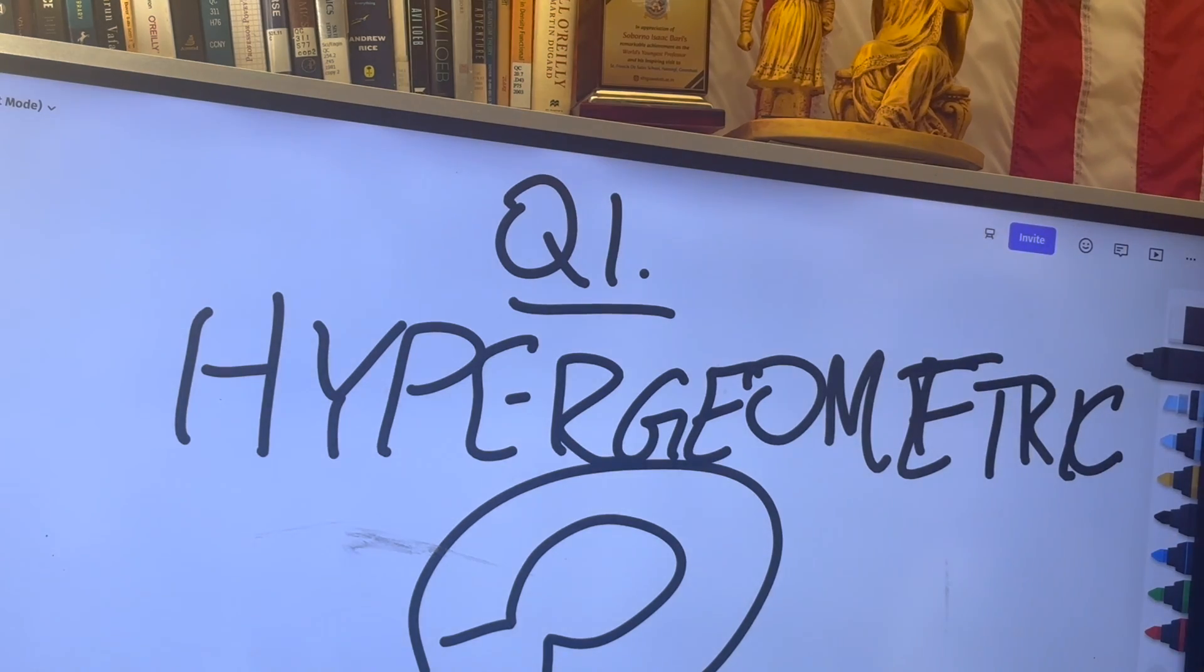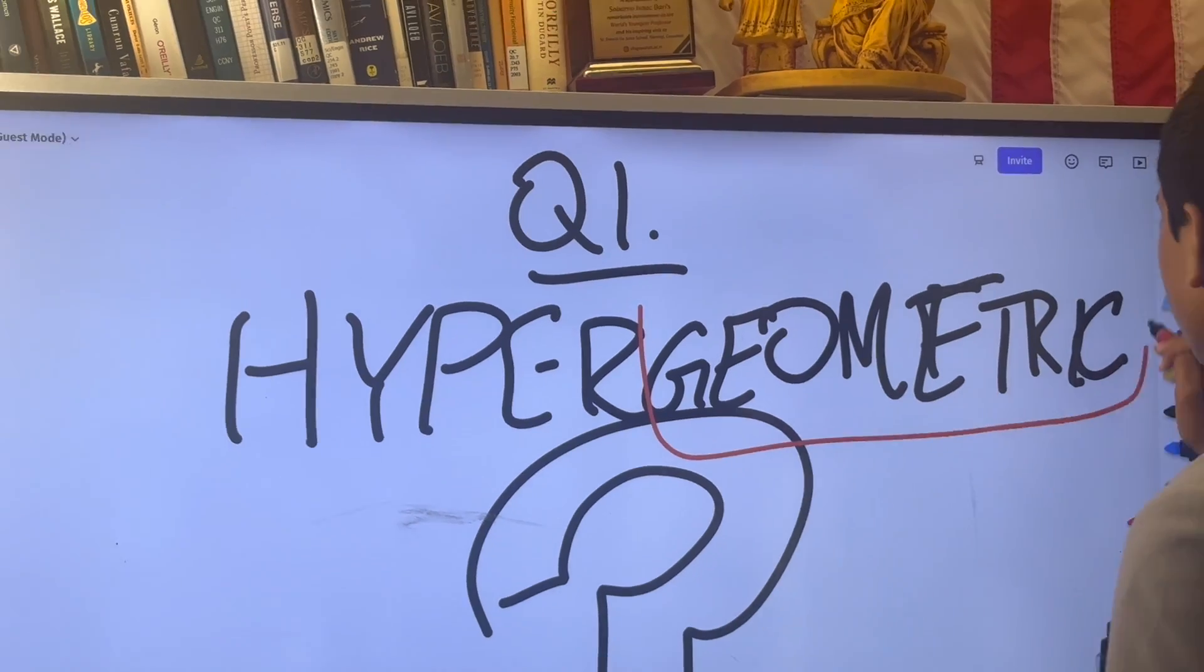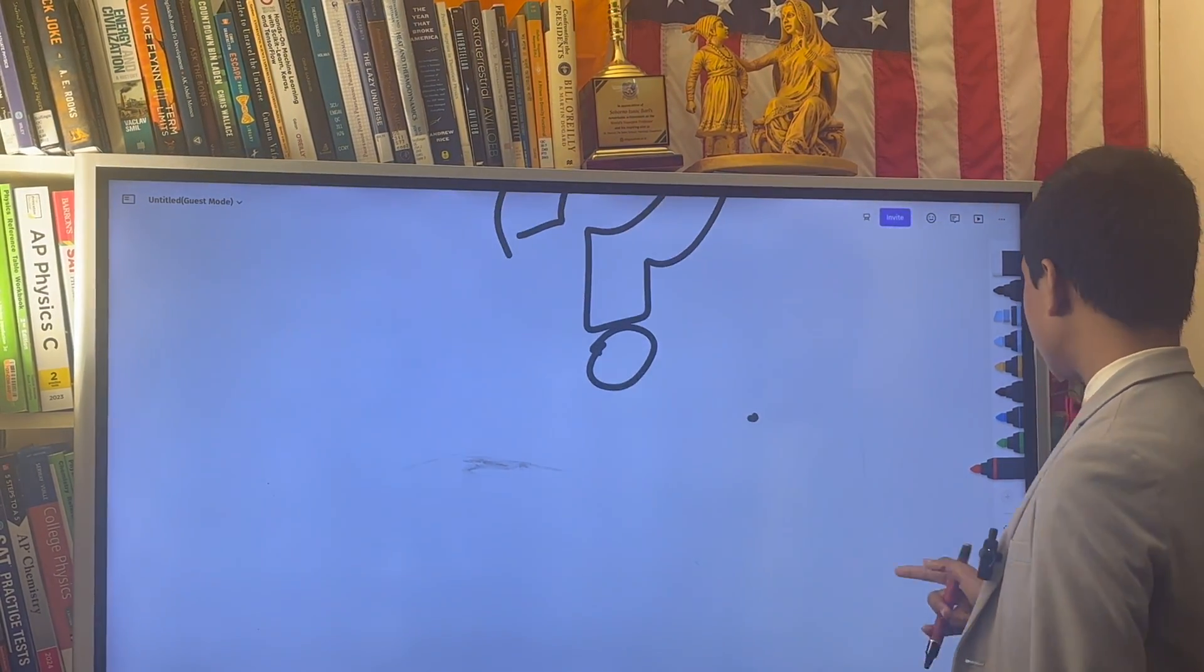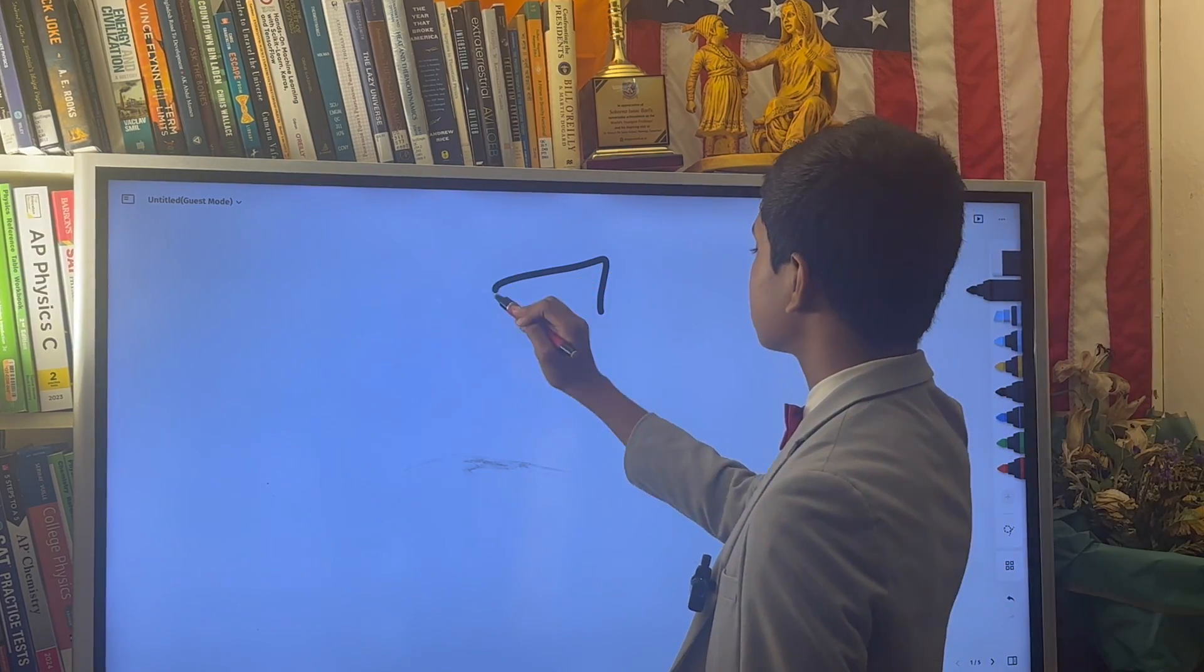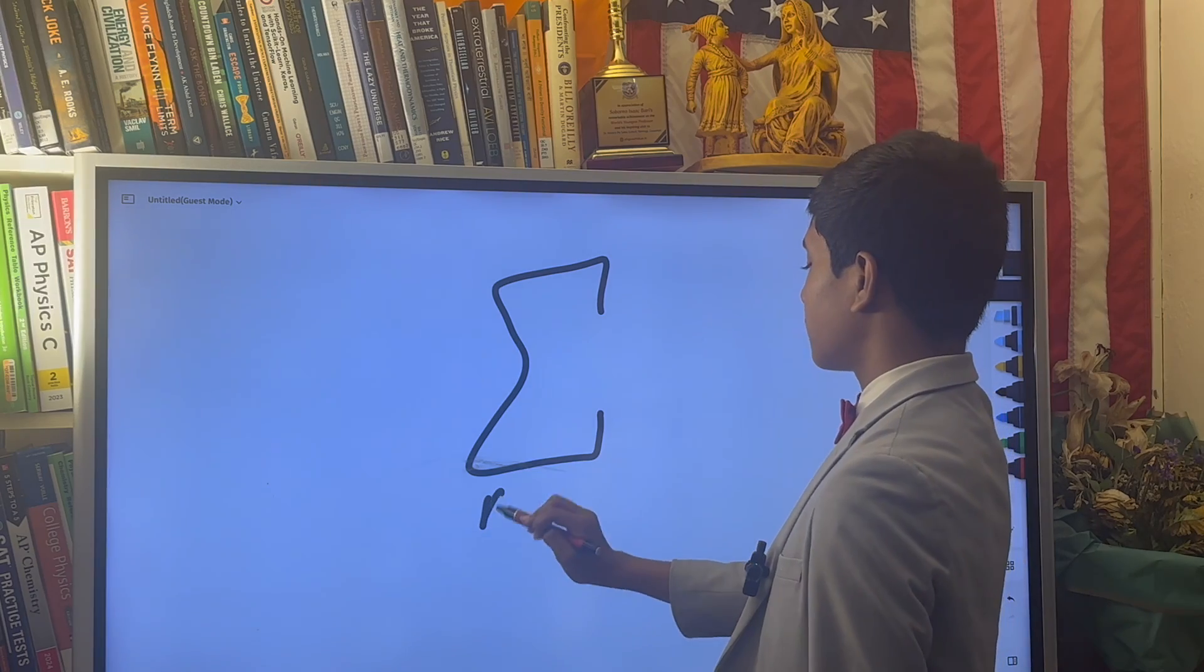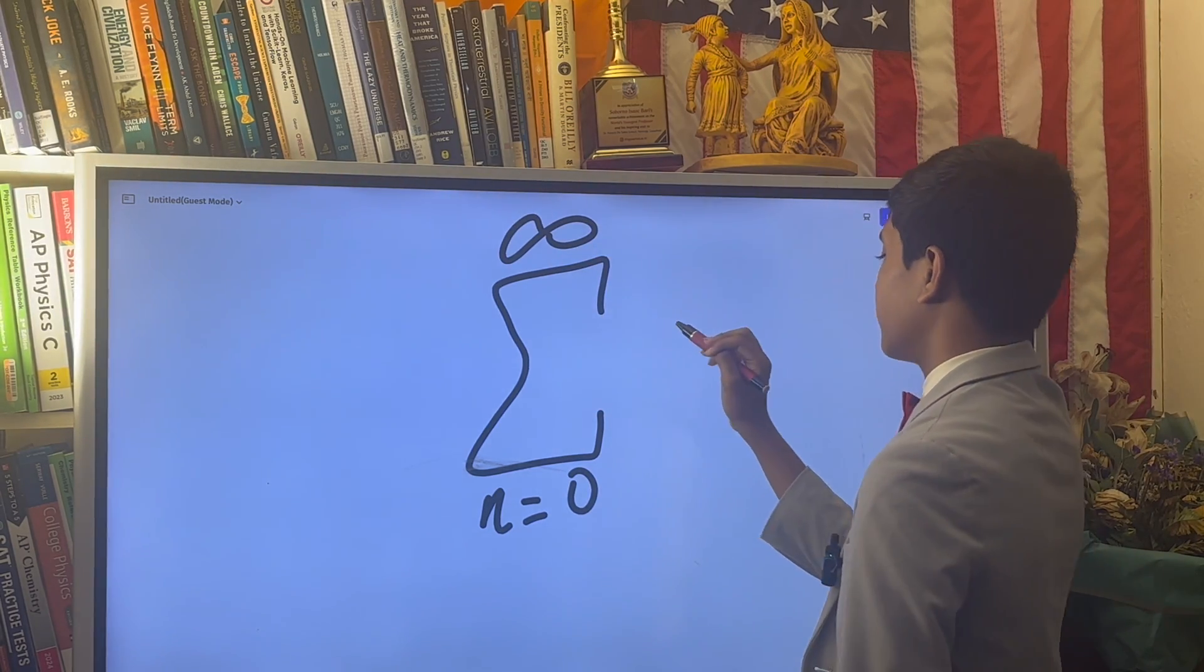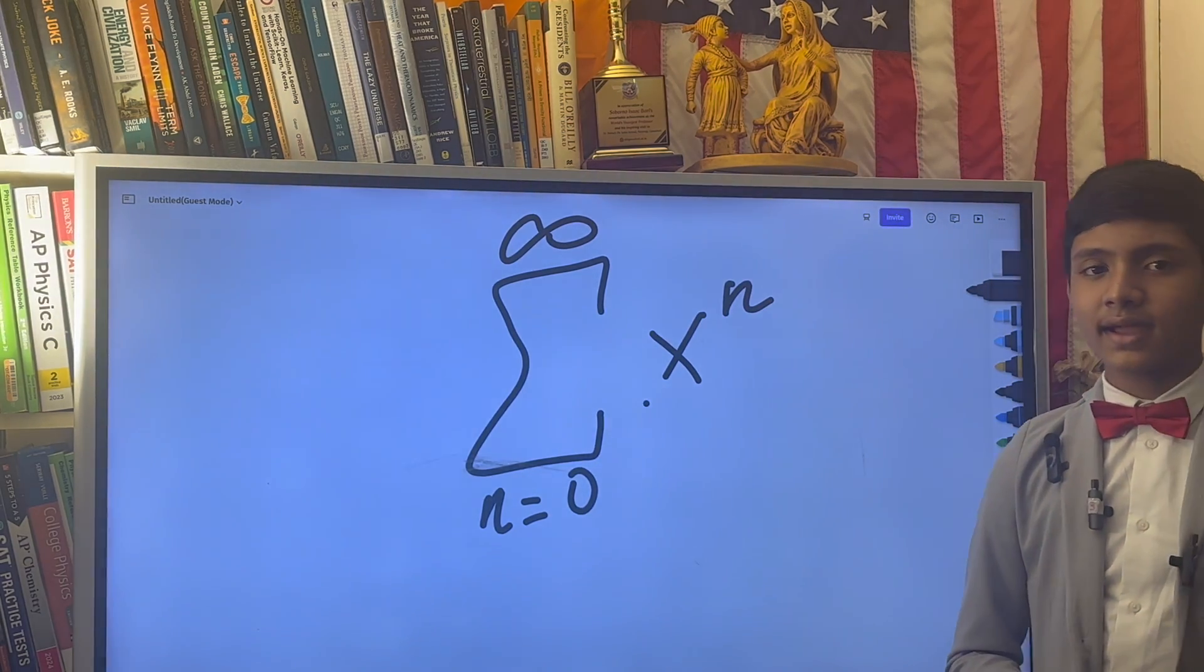Well, as you can guess from the name, it has something to do with geometric series. Now, recall that a geometric series is the infinite sum of x to the n, where we're summing over n, the index.